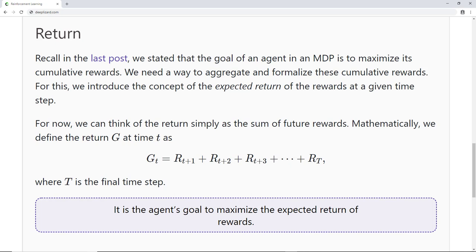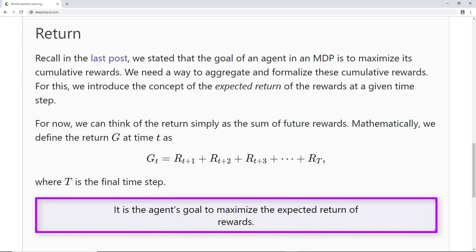Our revision of the way we think about return will make use of discounting. Rather than the agent's goal being to maximize the expected return of rewards, it will instead be to maximize the expected discounted return of rewards. Specifically, the agent will be choosing an action at each time step in order to maximize the expected discounted return.